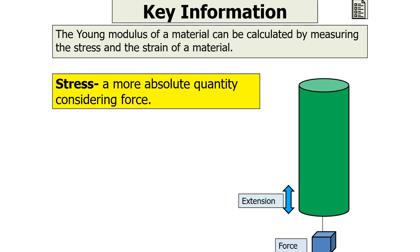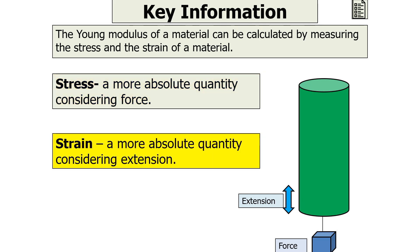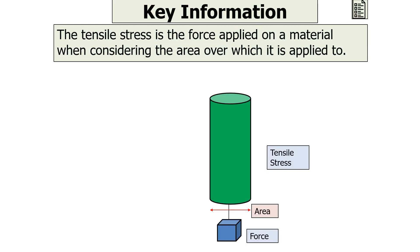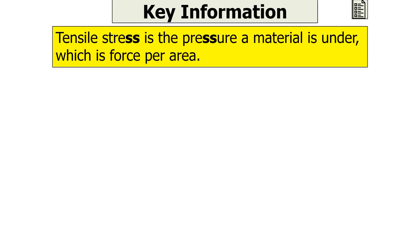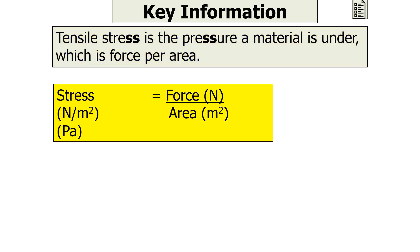Stress is considered a more absolute quantity than just force, and strain is more absolute than just extension. Tensile stress is the force applied on a material when considering the area over which it is applied — it can also be referred to as the deforming pressure acting on an object. So tensile stress, in newtons per metre squared or pascals, is the force in newtons divided by the area it's applied to in metres squared.